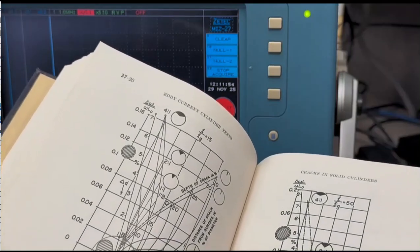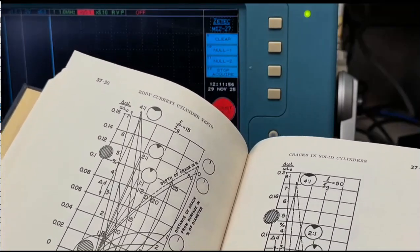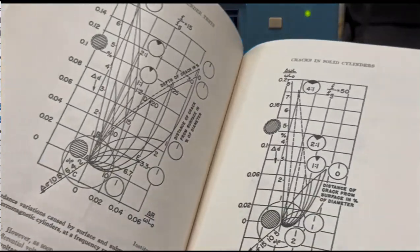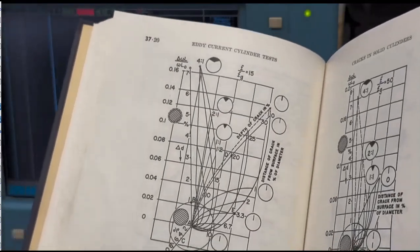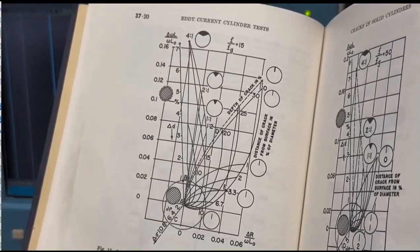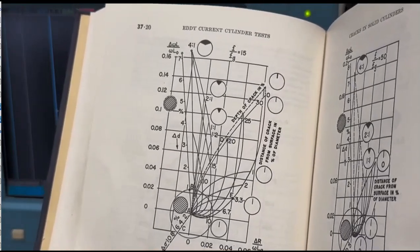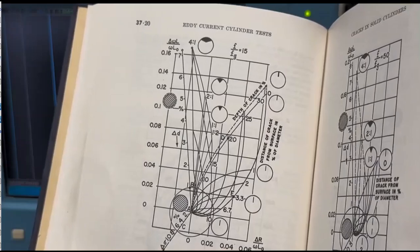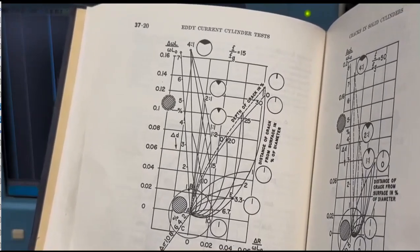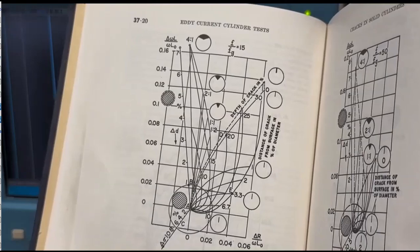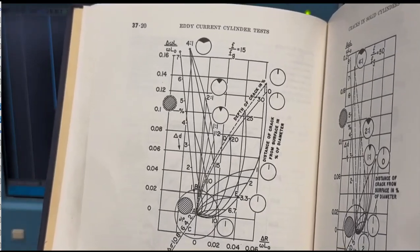Welcome to another eddycurrent.com educational video. In today's video, we're going to be looking at one of Dr. Forrester's impedance graphs, where he's explaining the effects of different diameters of discontinuities, as well as discontinuity depth below the surface and how that affects your signal phase and amplitude.